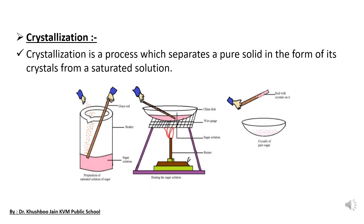The second process is crystallization. Crystals means shining molecules or shiny solid particles. Crystallization is simply the process by which we separate a pure solid in the form of its crystals from a saturated solution. A saturated solution is also known as a miscible solution.